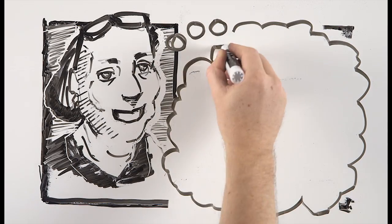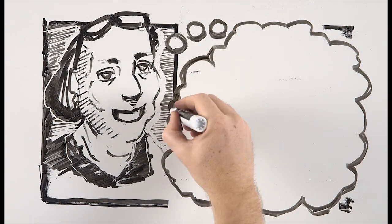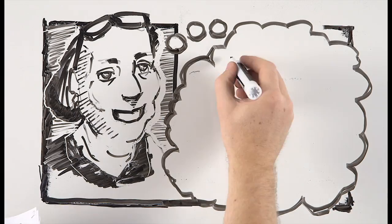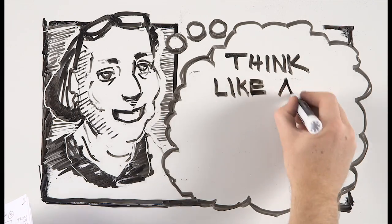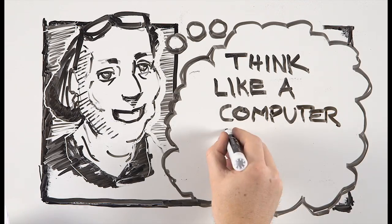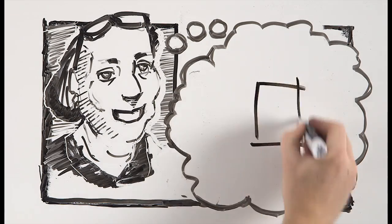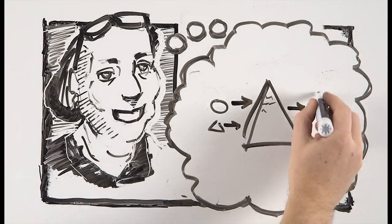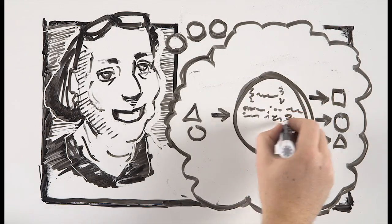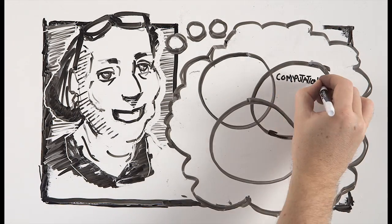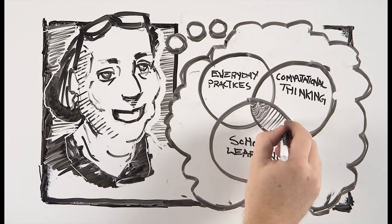Computational thinking is a kind of problem solving. Computational thinking is not thinking like a computer. It's thinking like a computer scientist. Since computer scientists have to represent lots of things and solve lots of problems, thinking like a computer scientist is useful, both in the real world and in school learning.